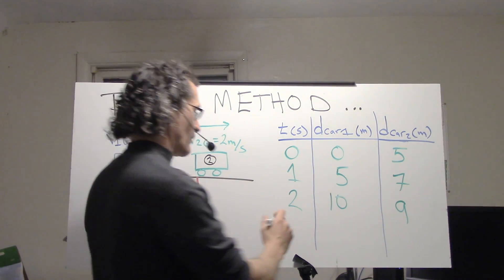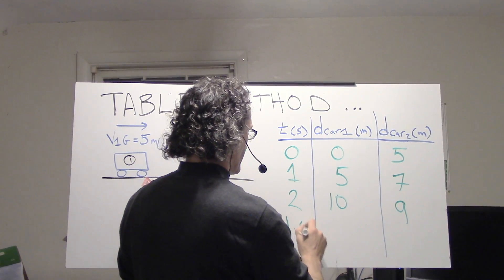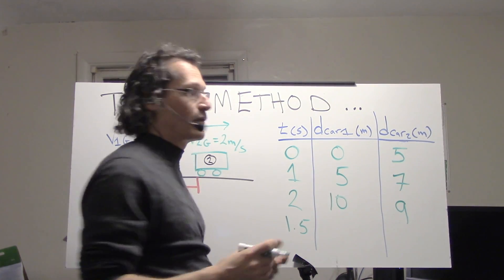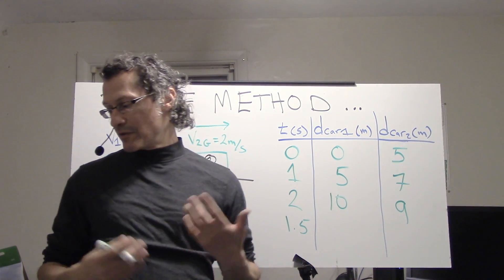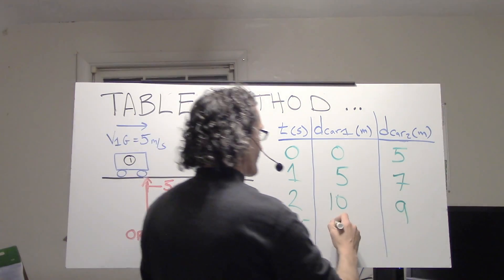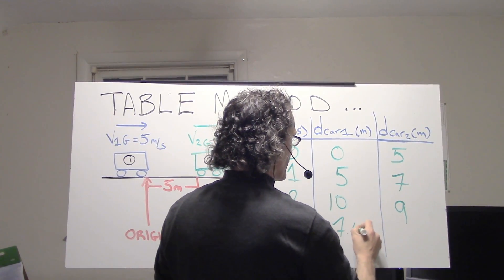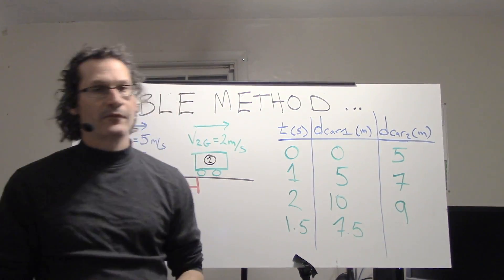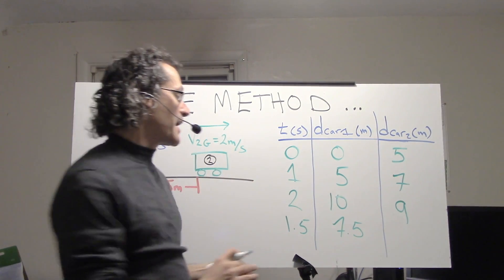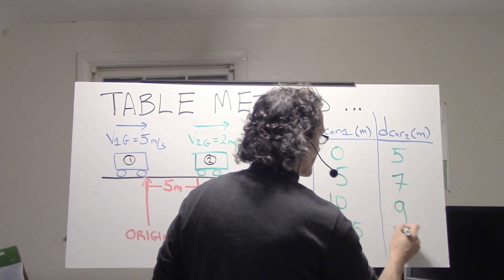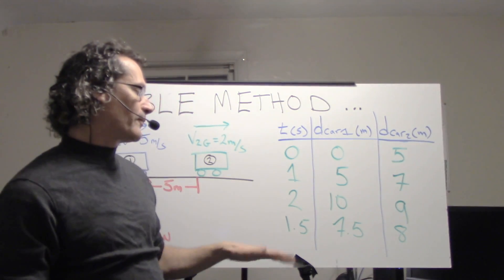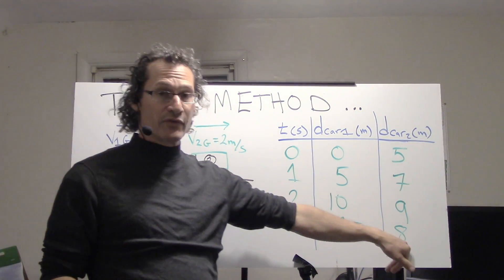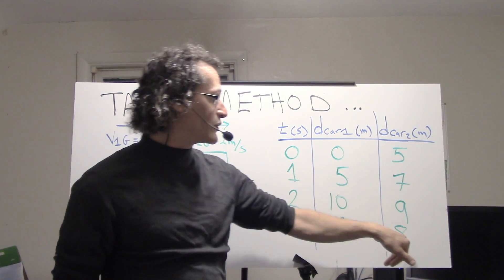So at 1.5, how far has car one traveled? Car one has traveled seven and a half meters. And if you crank this out, car two has traveled eight meters.